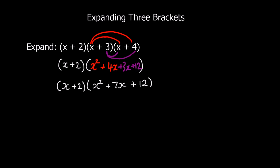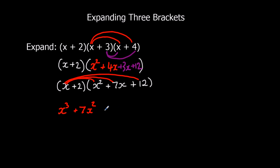Now we're going to expand these brackets — x times all three terms, and then the 2 times all three terms, so we end up with 6 terms. x times x squared is x cubed, x times 7x is 7x squared, and x times 12 is 12x.